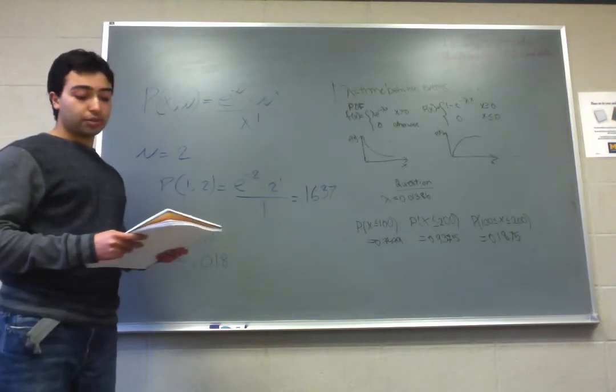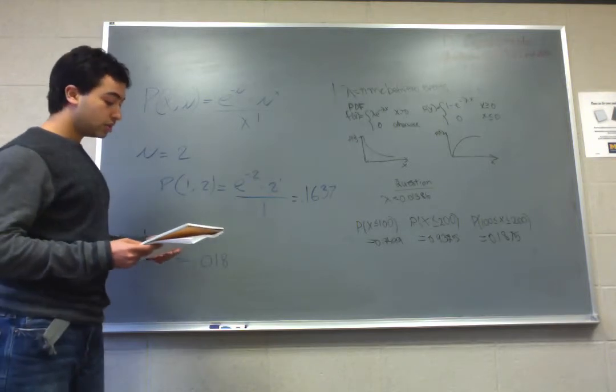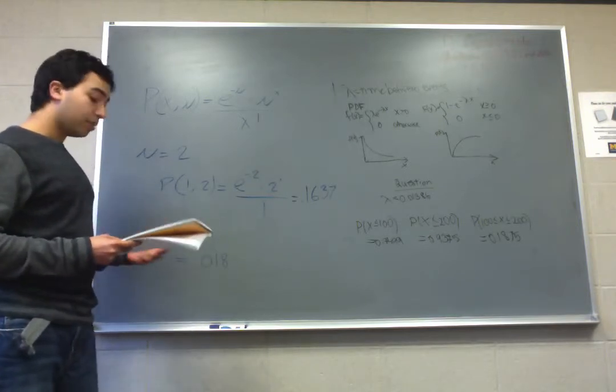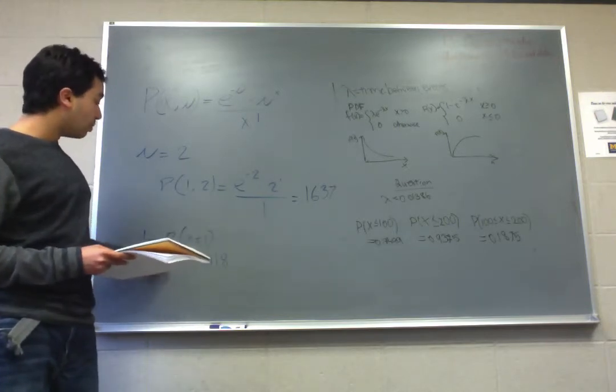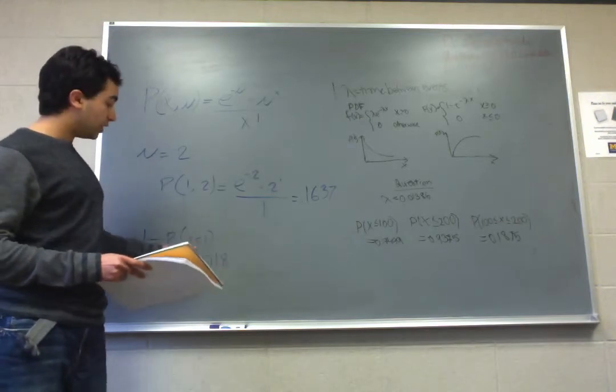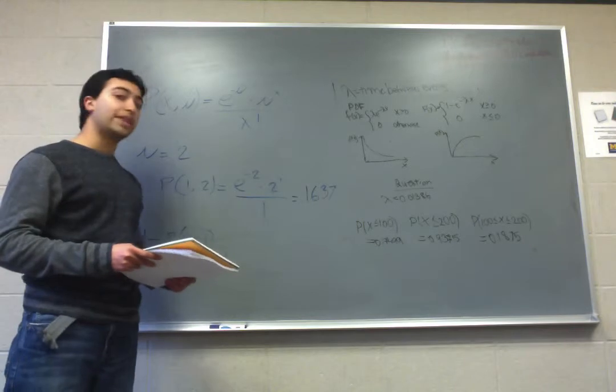It asks for the probability that the disk has at least two missing pulses. Now we can use the table in the back. The probability of at least two missing pulses is the same as 1 minus the probability that x is less than or equal to 1. You can find this right in the back of the book. This comes out to 0.018.